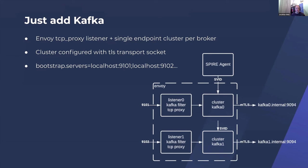The config has a listener on Envoy for each broker we need to talk to, with a cluster associated with each listener. Each cluster has a single endpoint which is the intended Kafka broker. The listener is configured with the Envoy TCP proxy filter, and the cluster is configured with a TLS transport socket that pulls certificate information and the trust bundle from the SPIRE agent via the Envoy SDS API. We've also got listeners configured with the Kafka filter, which is completely optional — it parses messages and produces basic metrics.